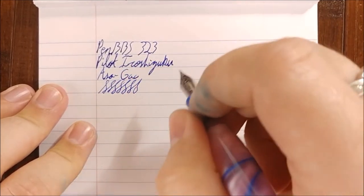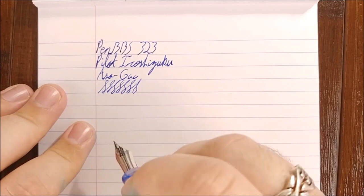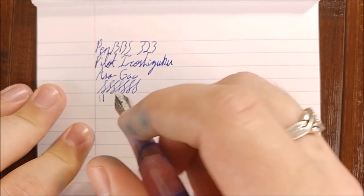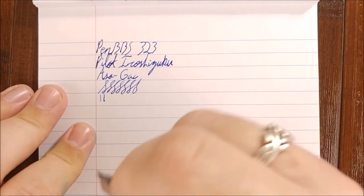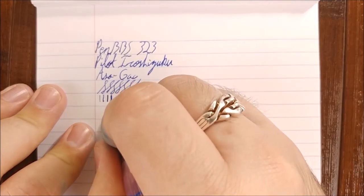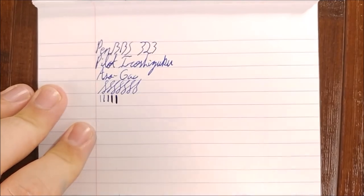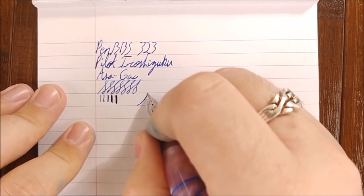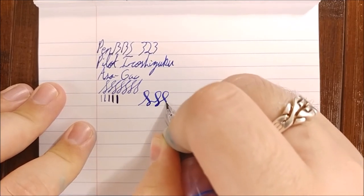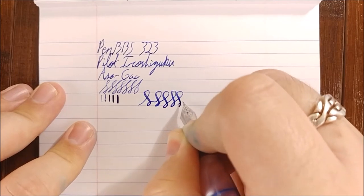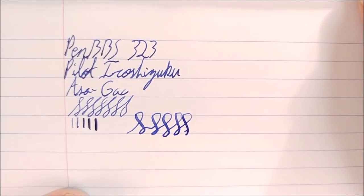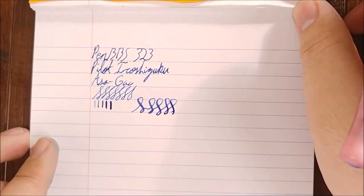So the pen writes pretty well. It's a fairly wet flow. One thing I do find interesting, I'll go ahead and do a reverse writing line, a normal writing line, and I'm going to do a couple different pressure variation lines because you can actually coax some line variation out of this. So you can see there, it's pretty interesting how much you can get out of this pen. Now it isn't super easy to flex, I'd say it's about as easy as a Noodler's steel nib, but you can definitely get some out of there. And I find that to be very impressive, especially at this price point.